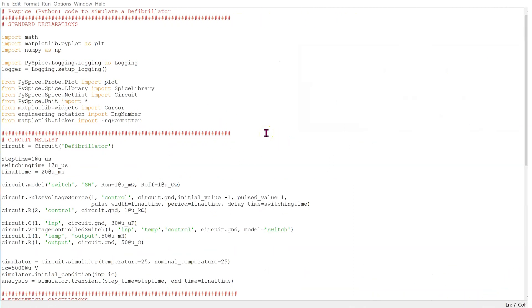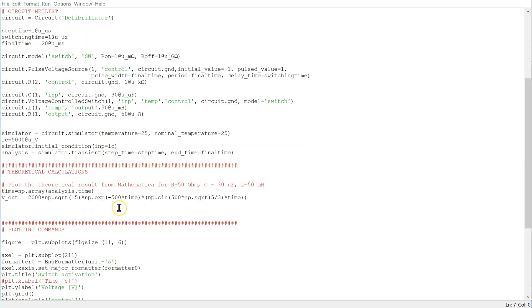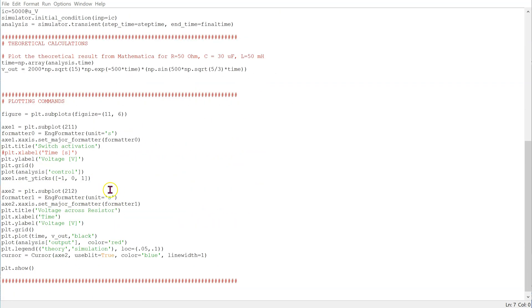This is the complete Python code to simulate the defibrillator circuit. The code is available in the comments section below. We have the standard spice declarations at the top, followed by the circuit netlist which we previously discussed, the theoretical calculations, and finally the plotting commands.